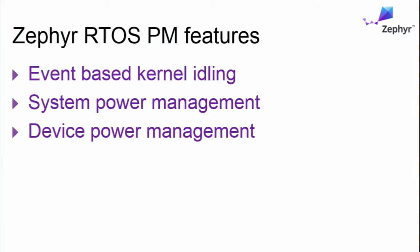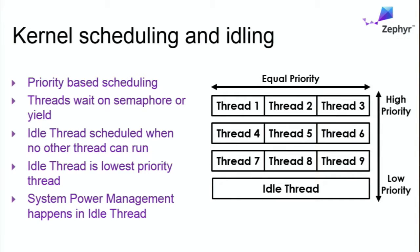The power management support features can be categorized. Some are built into the kernel's idling logic — we'll look at that first. The other classification is based on which area of the SOC the power management happens in. To understand the kernel power saving feature, we need to take a quick look at the scheduler. There was a presentation on Tuesday about kernel scheduling in detail; you can refer to the recording or talk to someone at the Zephyr booth. For this discussion, I'll cover it briefly and only the areas relevant to power management, especially the idle thread.